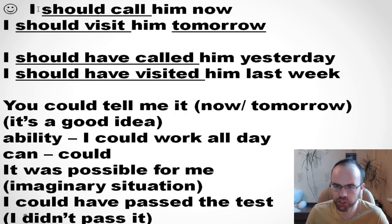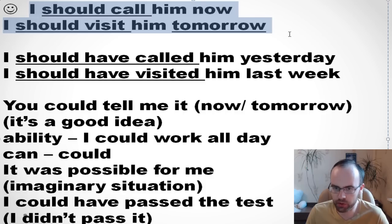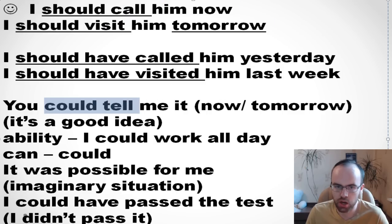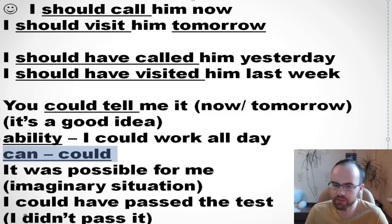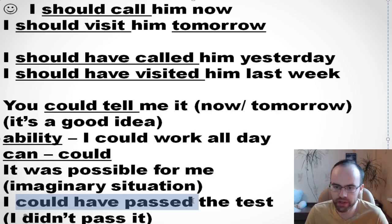Let's revise: 'I should call him now.' 'I should visit him tomorrow.' 'I should have called him yesterday.' 'I should have visited him last week.' 'You could tell me it now or tomorrow' — it's a good idea. We use could in the past for ability: 'I could work all day' — it was possible. We use can in the present and could in the past. For an imaginary situation: 'I could have passed the test' — in fact, I didn't pass it, but it was possible.